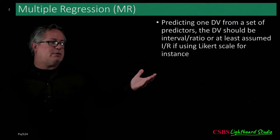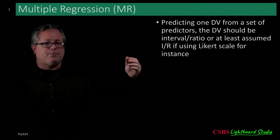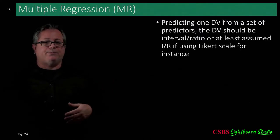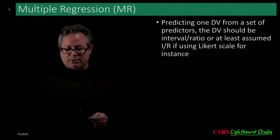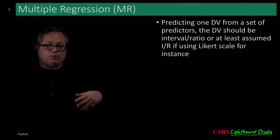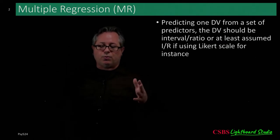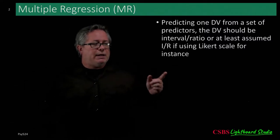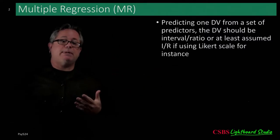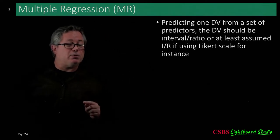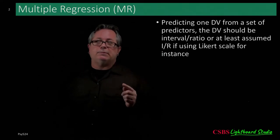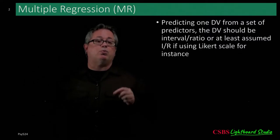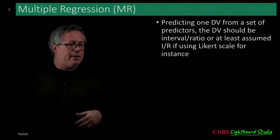We're assuming the outcome is at least interval or ratio level — a Likert scale or some continuously scored scale. This is as opposed to logistic regression, which handles dichotomous or ordinal outcomes. The predictors don't have that restriction: they can be dichotomous, continuous, ordinal, or categorical, though categorical predictors require some additional handling to work well within multiple regression.